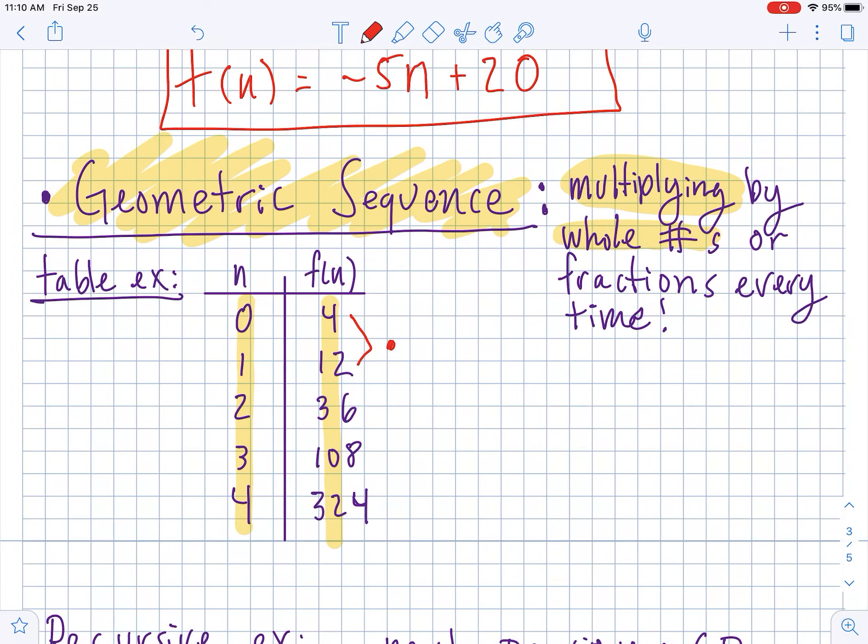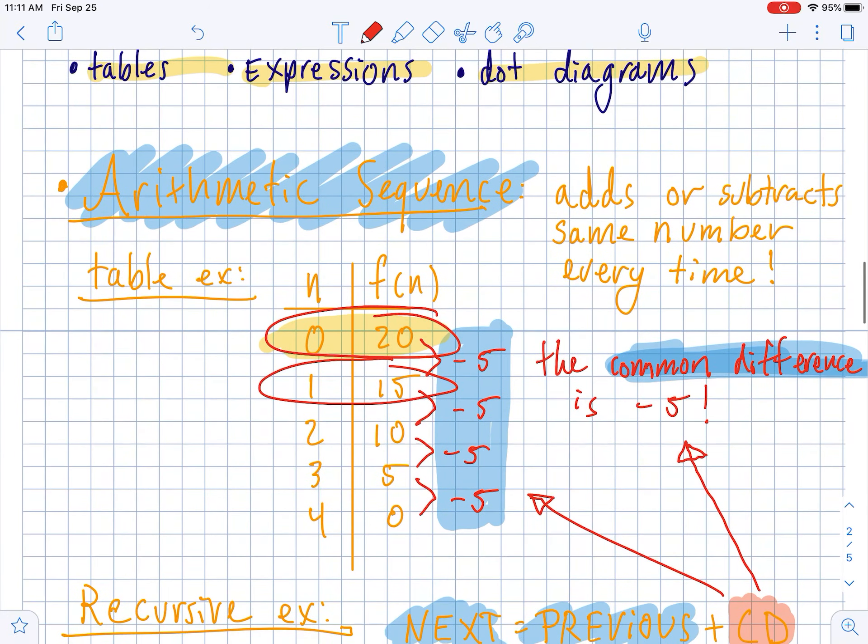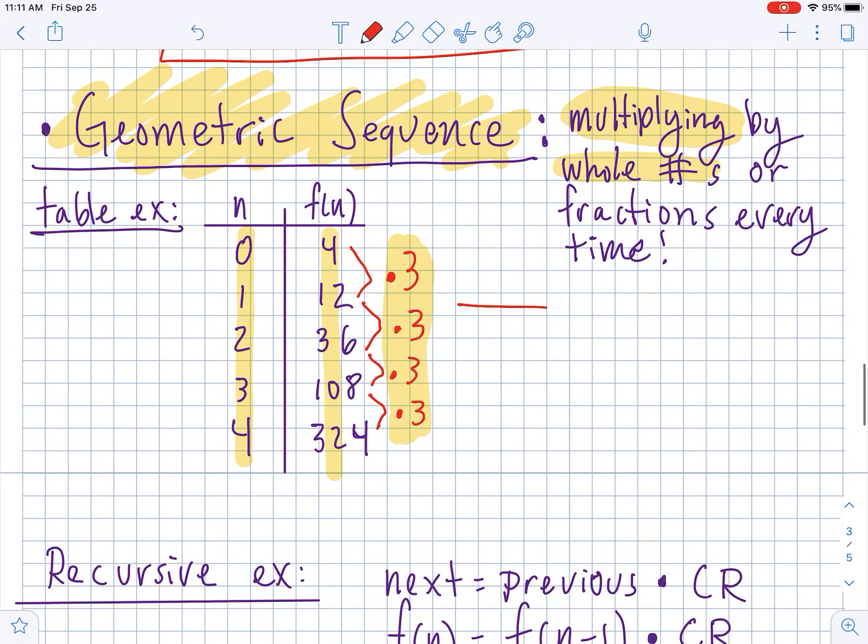You guys, to get from 4 to 12, this is a times 3. To get from 12 to 36, this is also a times 3. 36 times 3 is 108, so this pattern continues, that it gets multiplied by 3 every single time. This is your common ratio. So back up here, with the arithmetic sequence, it was a common difference. Now this is the common ratio with a geometric.